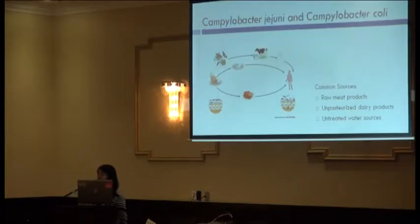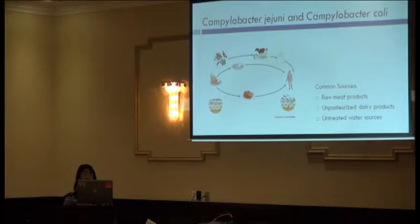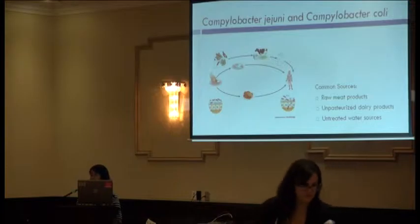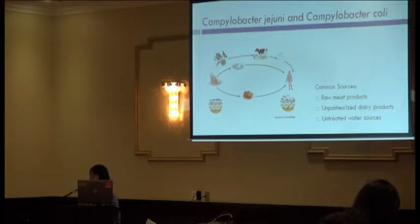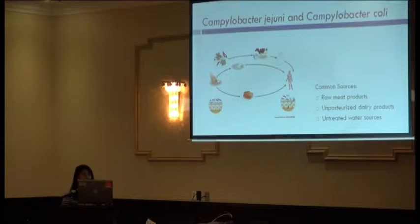Campylobacter jejuni and coli together are the number one bacterial cause for acute gastroenteritis in the developed world, including Canada. They impose a significant burden of disease. Usually the infection is self-limiting, however in severe cases it can cause chronic sequelae such as Guillain-Barre syndrome and reactive arthritis.